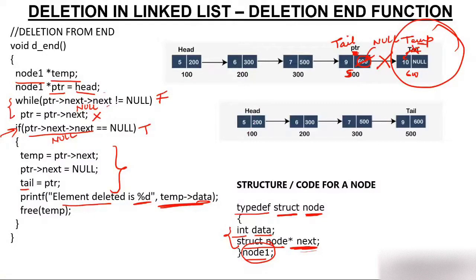Finally, head is the first node and tail is now the last node — you will not find 10 anymore. When you call the print function again, you will find that 10 has been deleted. So this was our topic of discussion: deletion at end function.